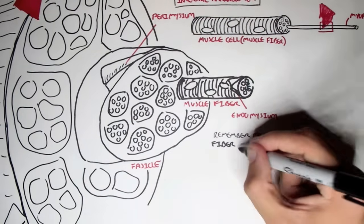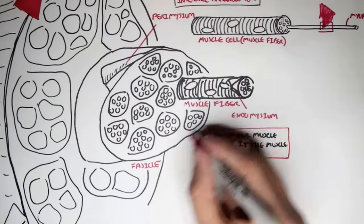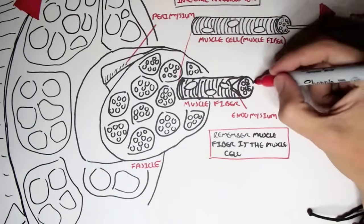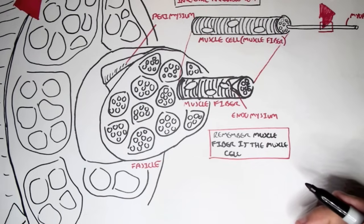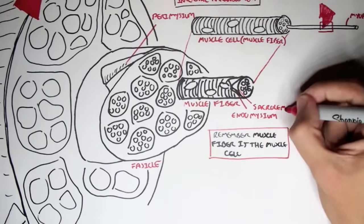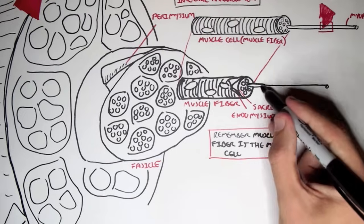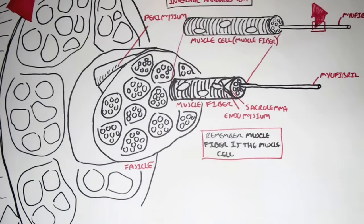Remember that a muscle fiber is the muscle cell. Also, the muscle fiber, the muscle cell, contains a membrane known as a sarcolemma. And if we take one of the internal structures of the muscle fiber, we have a myofibril.